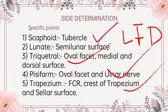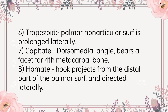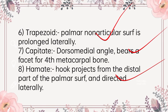Moving further to trapezoid: the distal articular surface is bigger than the proximal. The palmar non-articular surface is prolonged laterally. Moving further to capitate: the dorsomedial angle is the distal mouse projection from the body of the capitate, and it bears a small facet for the fourth metacarpal bone. Moving further to the hamate bone: the hook projects from the distal part of the palmar surface and is directed laterally.